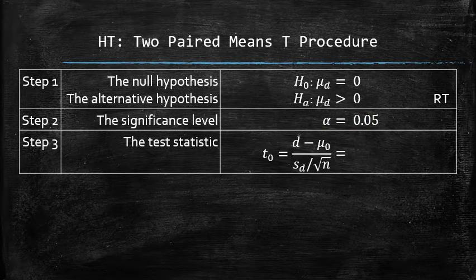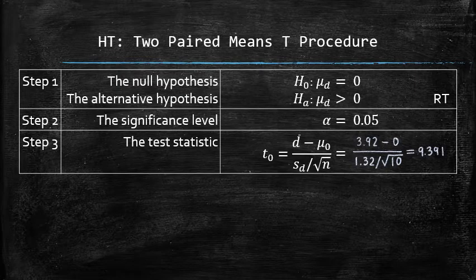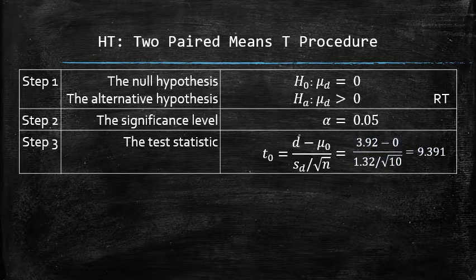The test statistic can be computed using the formula. In our case, the test statistic t0 is equal to 9.391. Step 3 is complete.